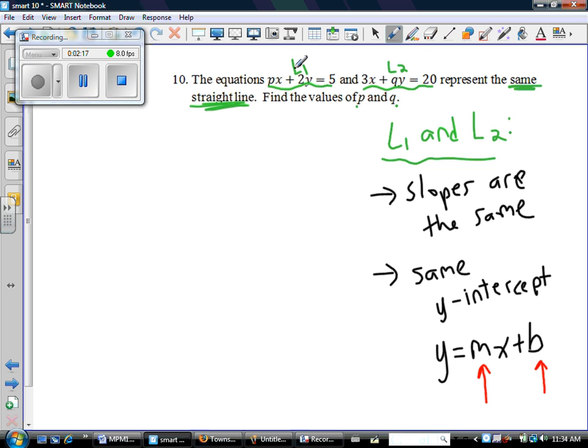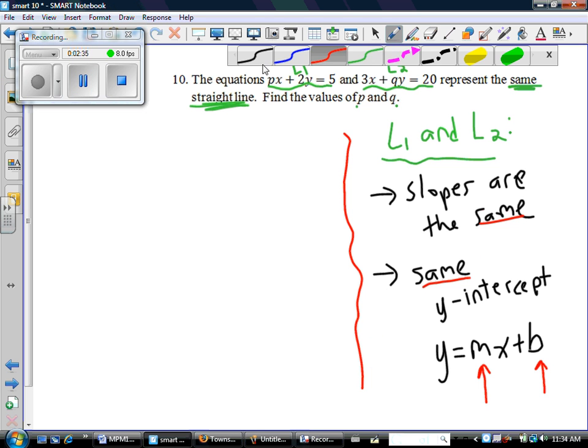So if I could see the slope of line one and line two, I could make sure that they were the same. And if I could see the y-intercept of line one and line two, I could make sure they were the same. And that's exactly what we're going to do. We're going to rearrange our lines into slope-intercept form, and then we can see how to make them the same.